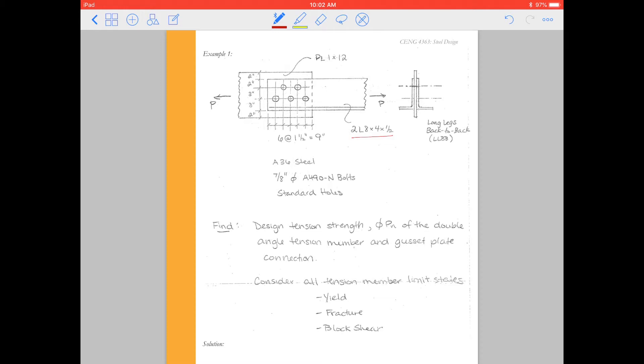We're given information about the steel, what kind of bolts, and the kind of holes. And we want to come up with the design tension strength for this member and for the gusset plate connection. We're going to consider all the tension member limit states.